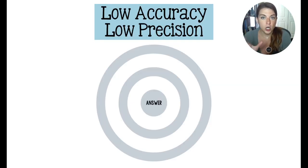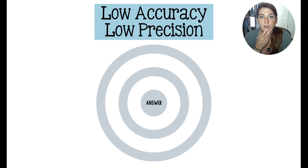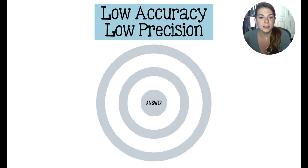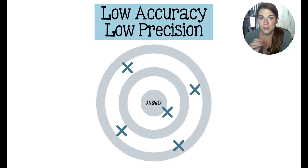Now I'm going to show some targets to talk about low accuracy, low precision, high accuracy, and high precision. The center of the bullseye is the correct answer we're trying to get to. Low accuracy and low precision would look like answers all over the place — clearly the directions are not great because results are scattered and not close to the scientific truth.